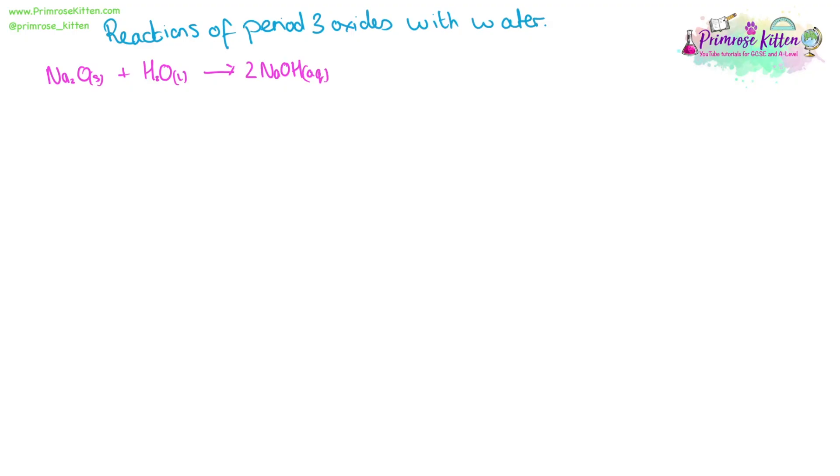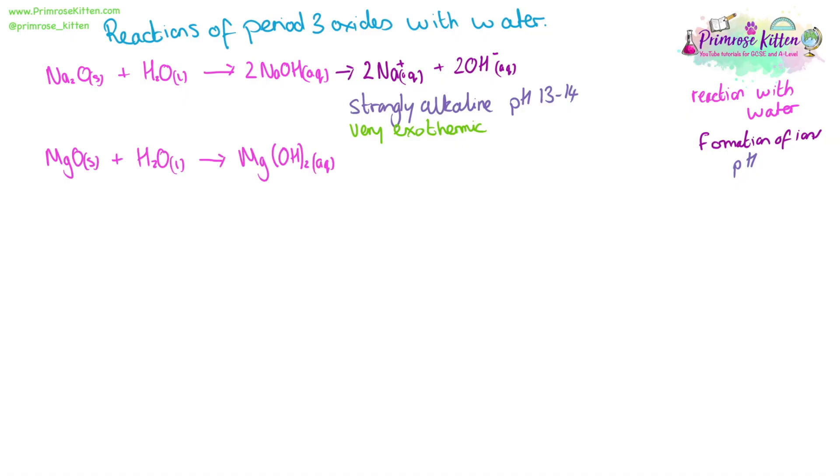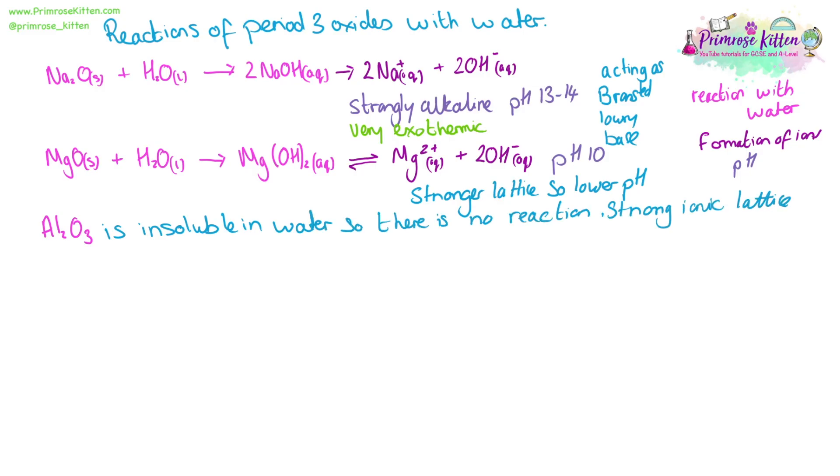Sodium oxide will react to give us sodium hydroxide. This is a strongly alkaline solution with a pH of 13 or 14. This reaction is very exothermic. Magnesium oxide will react with water to give us magnesium hydroxide. It is alkaline but slightly less so at pH 10 as the lattice is stronger. Aluminum oxide is insoluble in water so there is no reaction. It has very strong ionic lattice. Silicon oxide is also insoluble in water. These will give a pH of 7, the pH of water.